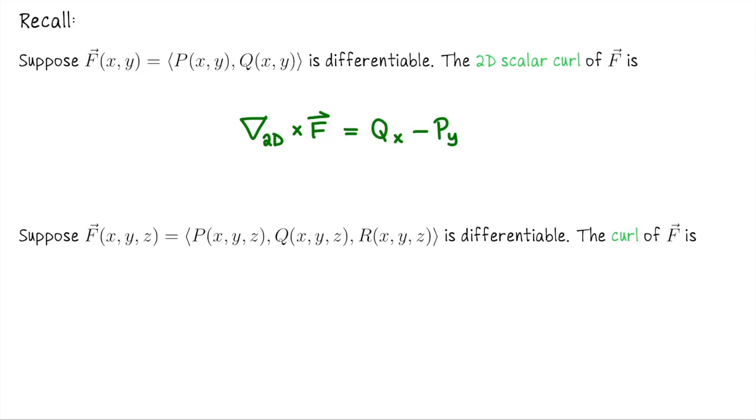So what is the actual curl of a vector field? Well it only makes sense in R3. Suppose F is a vector field in R3 whose component functions are P, Q, and R. The curl of F is that calculation we compute by writing down d/dx, d/dy, d/dz, and symbolically crossing that with the vector F. The result is a vector in R3 whose components look like dR/dy minus dQ/dz, dP/dz minus dR/dx, dQ/dx minus dP/dy.